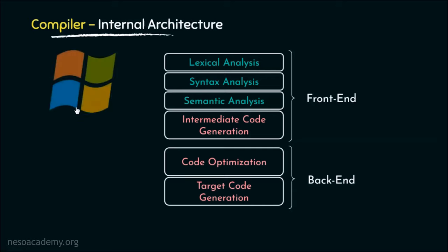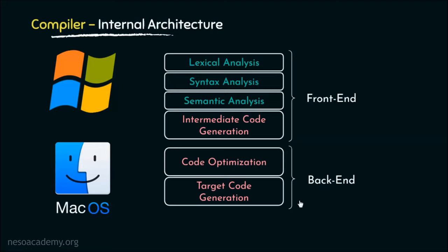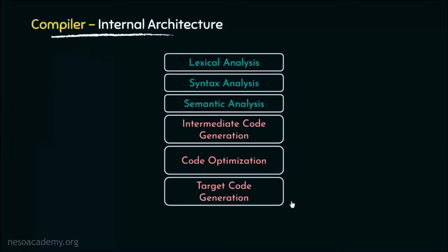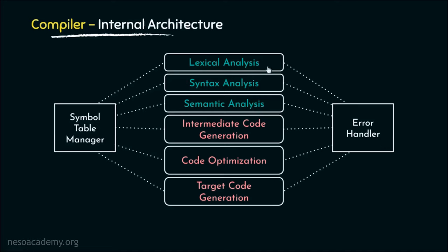Suppose we have an existing C compiler for Windows platform. Now we would like to build a C compiler for a Mac operating system. For this, we can modify the backend — that is these two phases — according to the Mac specification, and have those newly created backend phases merged with the existing frontend, and et voila! We now have the C compiler for the Mac OS. Now alongside these six phases, there are two more components of the compiler: the symbol table manager and the error handler. Information gathered from the analysis phase is stored in the symbol table and used by the synthesis phase, and the error handler deals with error detection and recovery. These two are used by all the six phases.